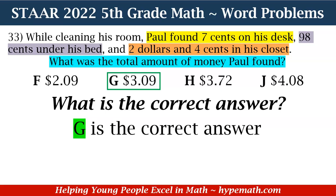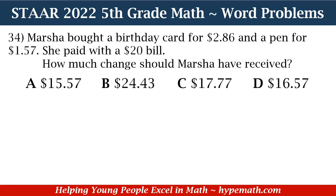Let's move to question number 34. Marsha bought a birthday card for $2.86 and a pin for $1.57. She paid with a $20 bill. How much change should Marsha have received? Is it A, $15.57; B, $24.43; C, $17.77; or D, $16.57?